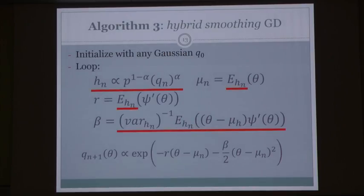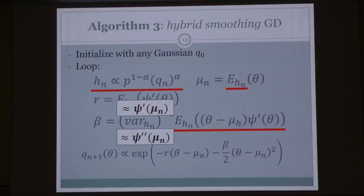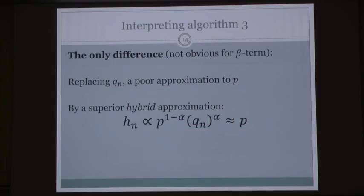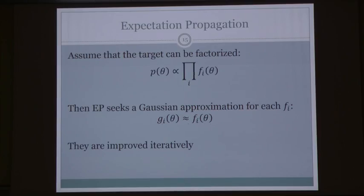This enables me to define algorithm 3, a slight variant of the other algorithms. In each step of the loop, instead of working with q_n as in algorithm 2, I work with the hybrid h — the geometric mean of q_n and the target distribution. The only difference between algorithms 2 and 3 is that every expected value with q_n is replaced by an expected value with h_n. So I've replaced the poor approximation with a superior hybrid approximation. This idea of using hybrid approximations as better approximations to p naturally leads us to expectation propagation.